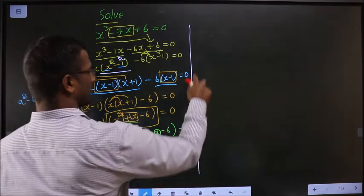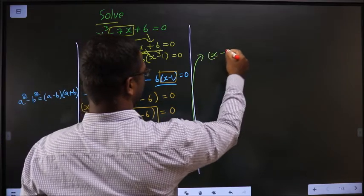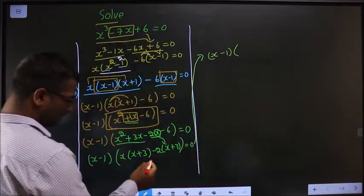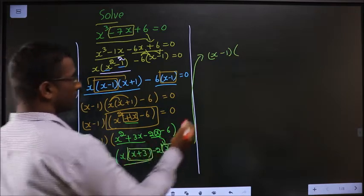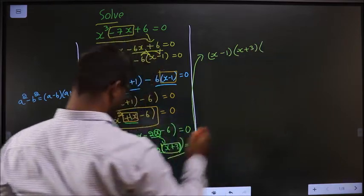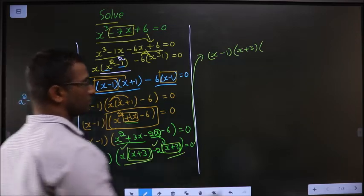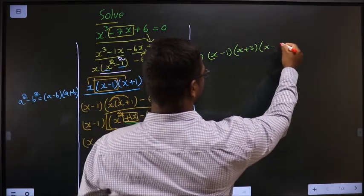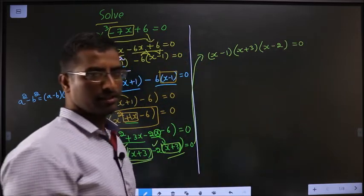So this I will be writing here now. So it is x minus 1. From these two I will take x plus 3 common. So here I am left with x, here I am left with minus 2.